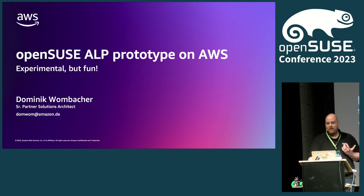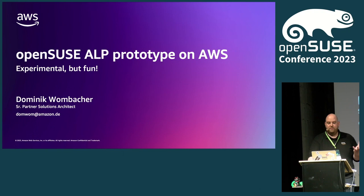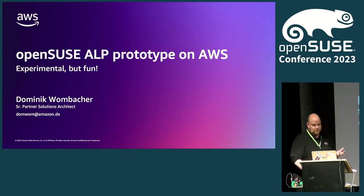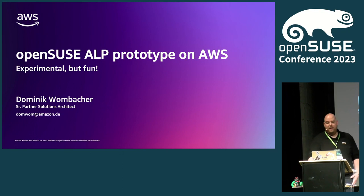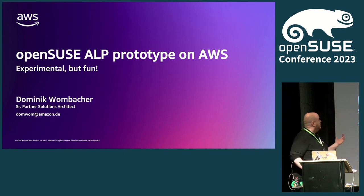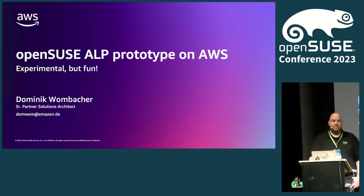Personally, I would describe myself as kind of a tech nerd, so I love to solve complex problems, contribute to open source, and think around various technologies. Today, I talk about OpenSUSE ALP prototype on AWS.